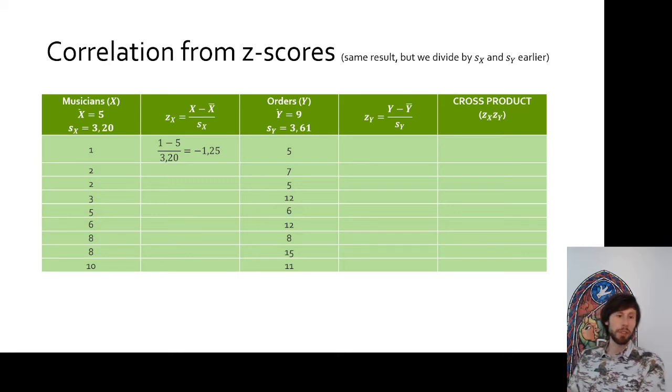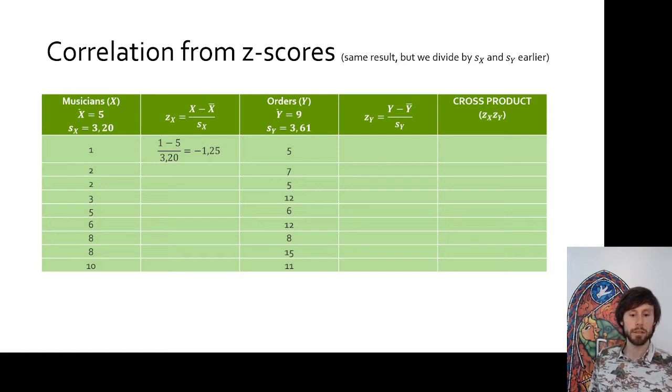There's a number of things to be said about what the z-score actually is. There is maybe time for that in a future video series, who knows? But can somebody quickly recap what a z-score is supposed to express? What does this z-score of the first cook express? Minus 1.25. It shows the amount of standard deviations that the observation is away from the mean. Yes, a z-score expresses how many standard deviations a score is away from the mean.